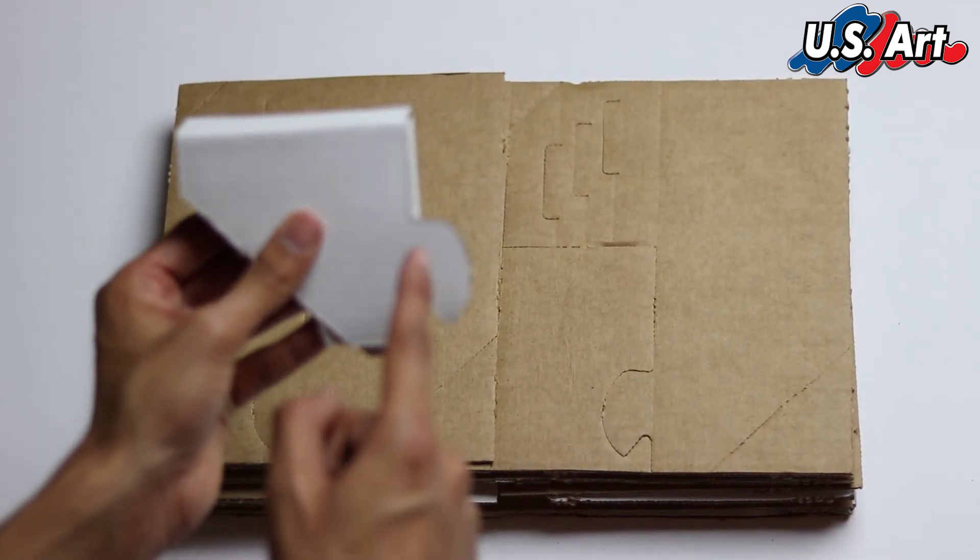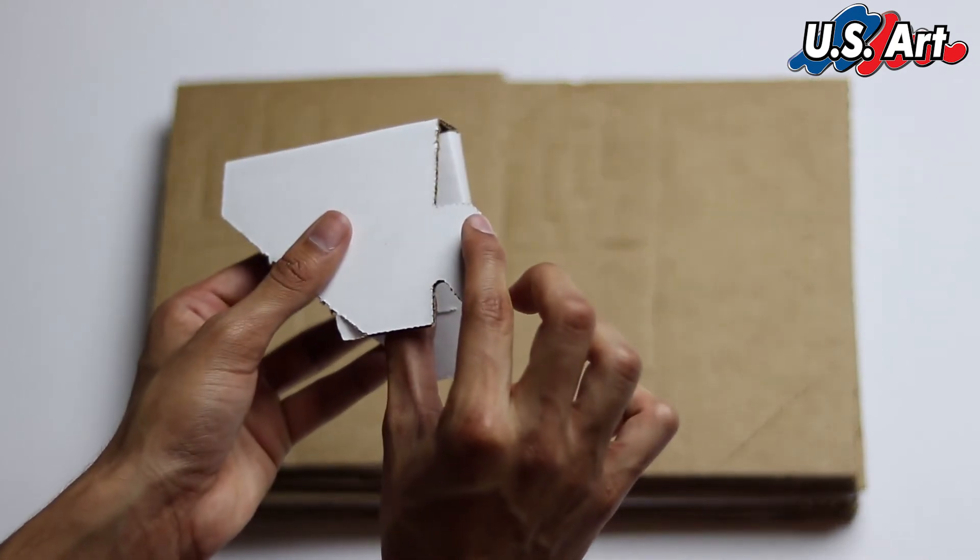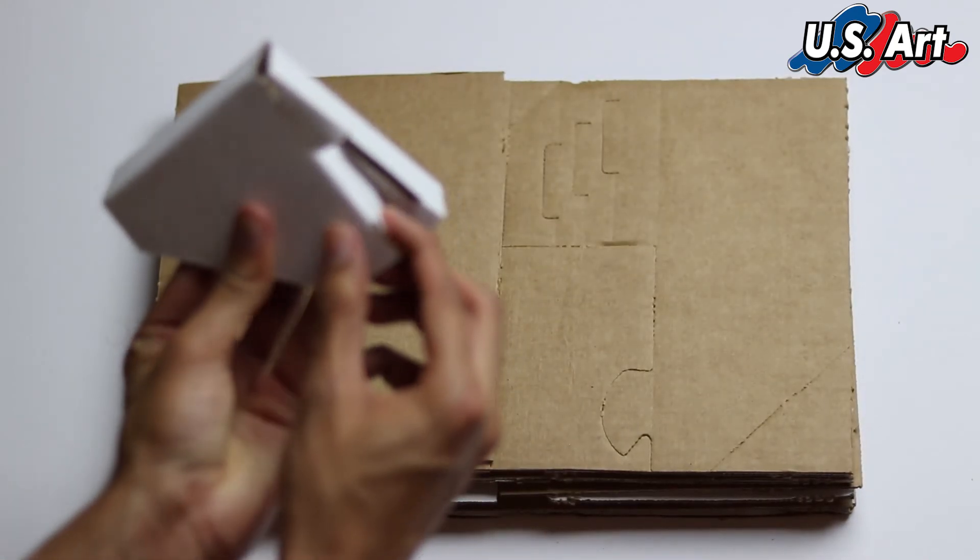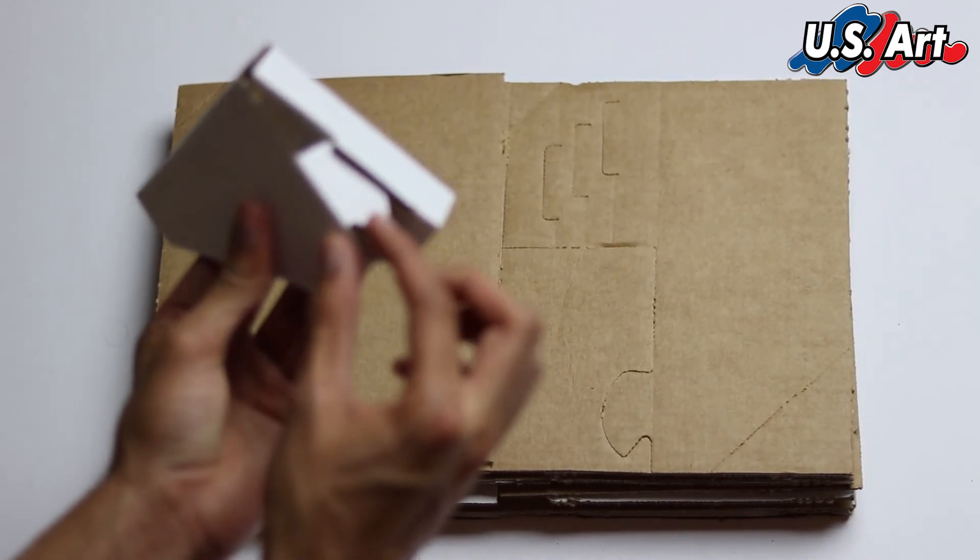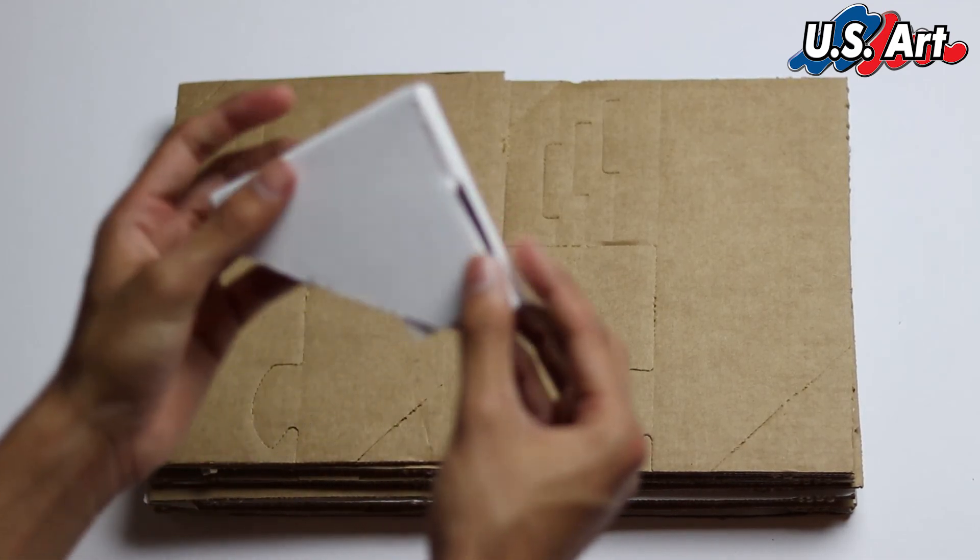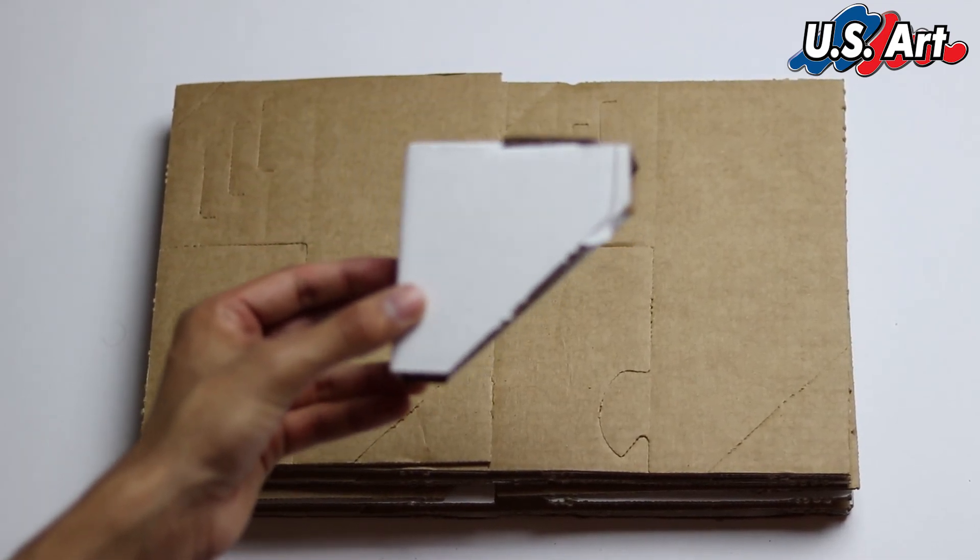The only thing that's left is to fold this little tab over. Fold that tab over, insert it into the corresponding tab, and there you have it. There's your corner protector. Thank you.